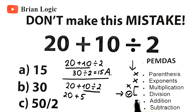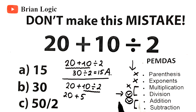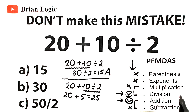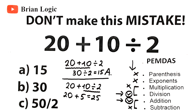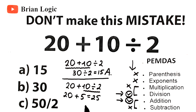Now the last step is addition and subtraction — add or subtract from left to right. We have addition here: 20 plus 5 equals 25. We don't have any subtraction. So we have six steps considered: no parentheses, no exponents, no multiplication, but we have division and addition. The main rule to remember is that division always comes before addition — you should always divide first and then add. That is the main thing to understand.